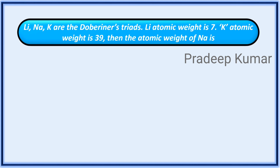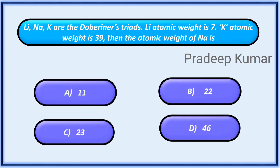Lithium, Sodium, Potassium are the Döbereiner's Triads. Lithium atomic weight is 7, Potassium atomic weight is 39. Then the atomic weight of sodium is — Options: A. Eleven, B. Twenty-two, C. Twenty-three, D. Forty-six.